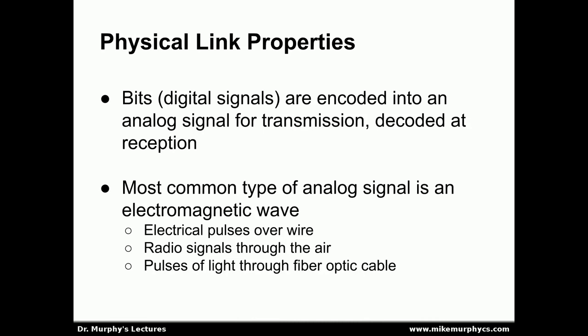Regardless of the type of physical link, all physical links have to take the bits — the actual digital signals or digital messages — and encode them into some kind of an analog signal in order to be transmitted over the link, and then decode that transmitted signal at the other end to receive the original bit stream. The most common type of analog signal used for this purpose is an electromagnetic wave, because they typically travel at the speed of light through a vacuum, or relatively close to the speed of light through other materials, making them fast. Different types of electromagnetic waves can be used: electrical pulses over wire, radio signals through the air, or pulses of light through a fiber optic cable.